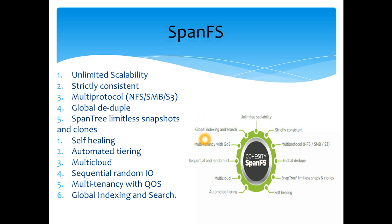To address this market, Cohesity developed a file system called the Span File System, which allows unlimited scalability and strict consistency. This means any write on the Cohesity platform is a definite write — there is no inconsistency, data will not be corrupted, and you won't get errors or inconsistent data on reads. The Span File System is also multi-protocol: you can use it with NFS, SMB, and Amazon S3, meaning it extends from your private data center out to the cloud.